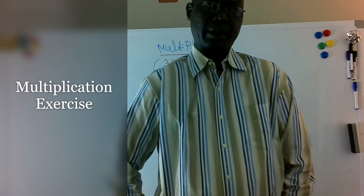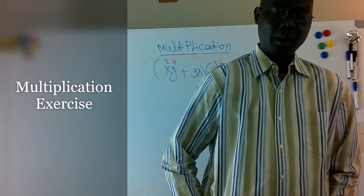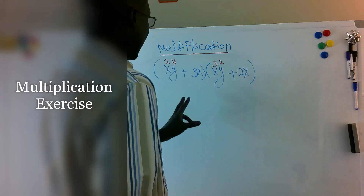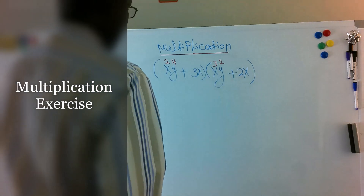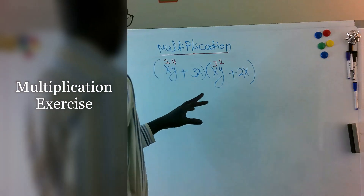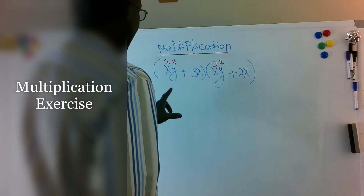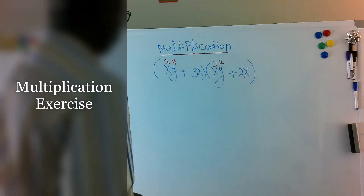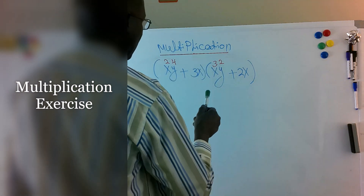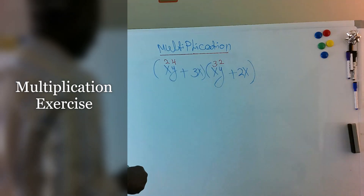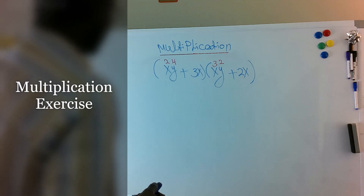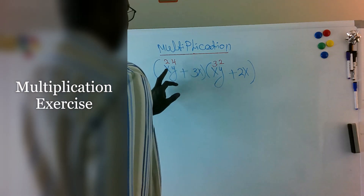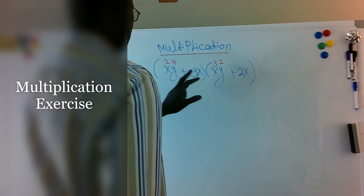Hey guys, welcome back. Today's exercise problem we're going to do a multiplication. What you're going to learn in this example is that when you multiply terms like x^y and x^y, we combine the powers on those x and y. Sometimes adding is what we're doing — x and x are what they call like terms.